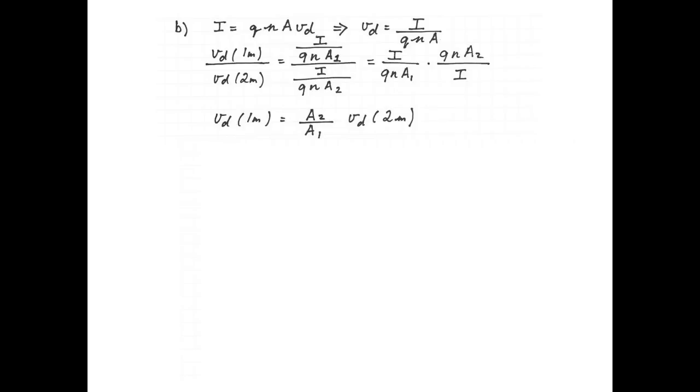We get that the drift velocity in the one meter segment is equal to A2/A1 multiplied by the drift velocity in the two meter segment. The second area is π × 2 cm^2, and the first area is π × 0.5 cm^2.